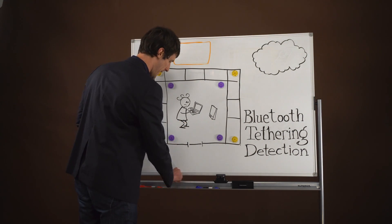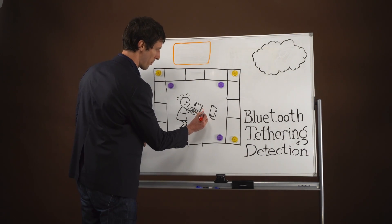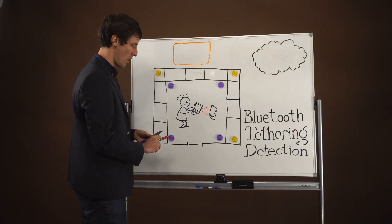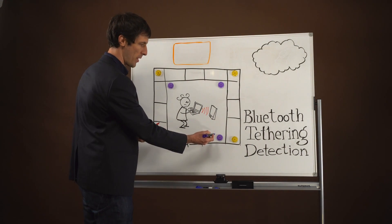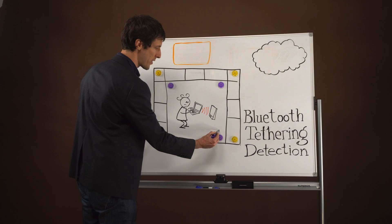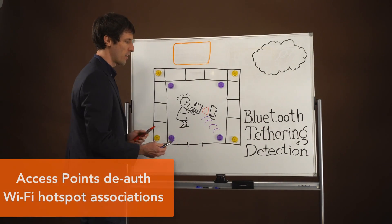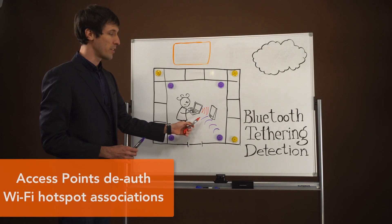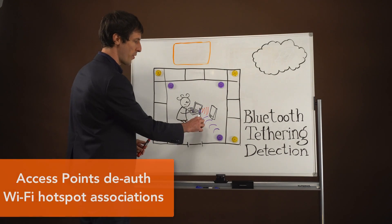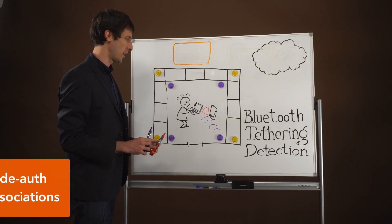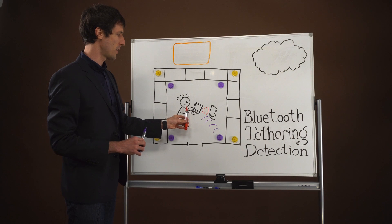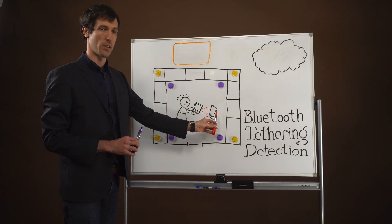When they attempt to connect their laptop to this hotspot, the existing corporate access points will detect this association event and then send their own deauthorization event that will prevent this connection from completing, therefore preventing anybody from connecting to their own access point.